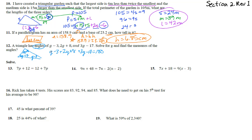Simplifying: g plus 2g plus 3g is 6g; negative 3 plus 8 minus 17 is negative 12. So 6g minus 12 equals 180. Adding 12 to both sides gives 6g equals 192, then dividing by 6 gives g equals 32.